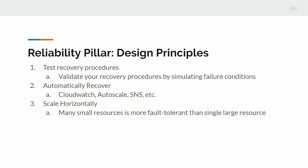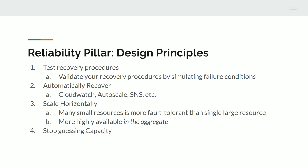You as an admin or architect would know that a failure happened through the logs, CloudWatch, and SNS. Being able to scale horizontally — adding more instances as demand spikes or removing instances as demand wanes — allows you to be more available in the aggregate. With all these tools, you can stop guessing about capacity and simply pay for what you're using.